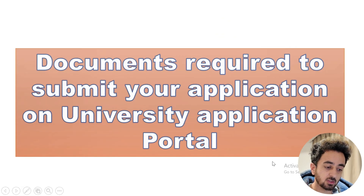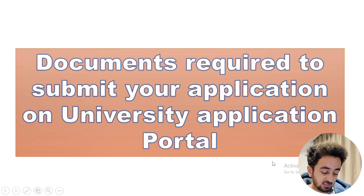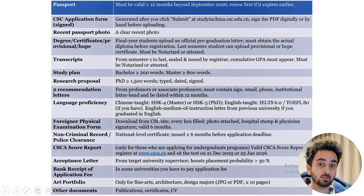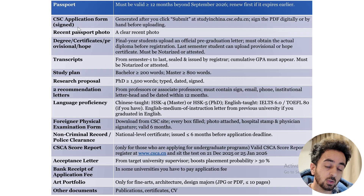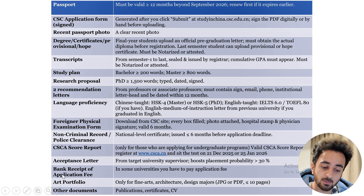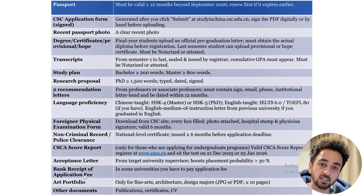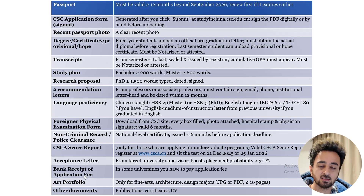Now for documents required on the university application portal: for most universities the procedure and documents are almost the same. You'll need your passport, and importantly the CSC application form — the form you already downloaded and saved from the CSC portal must be uploaded here. Research proposal and bank receipt of application fee are also required on the university portal. All other documents remain the same as on the CSC portal.